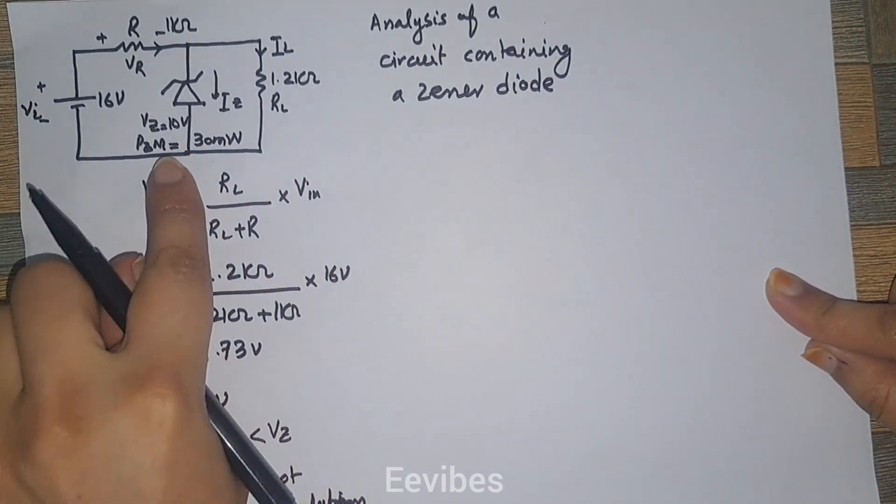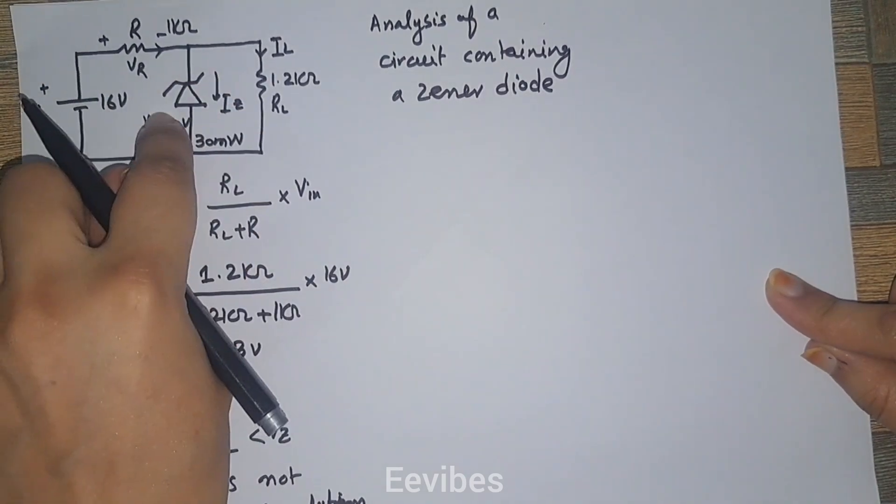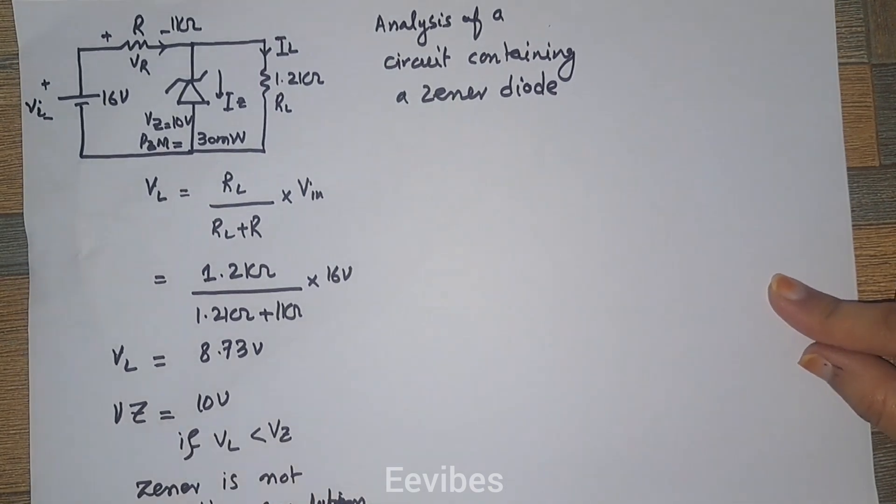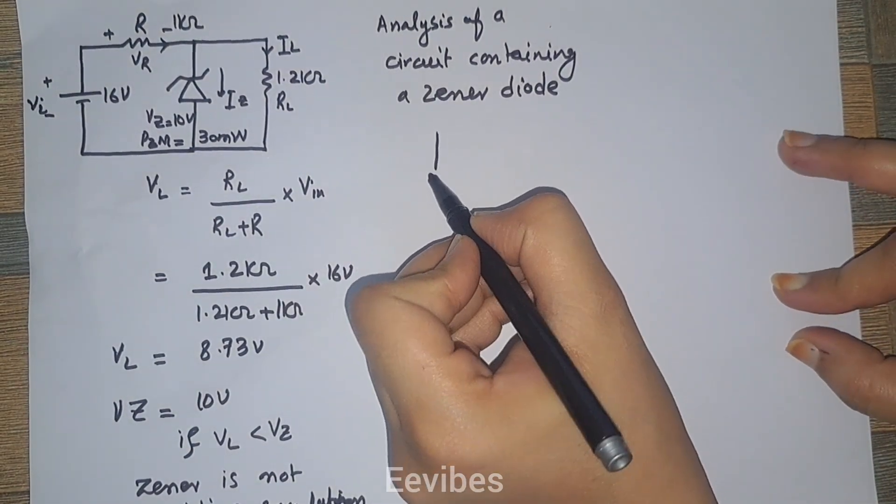But this is not the scenario since VL is less than VZ. Now in this case, the equivalent circuit can be drawn by replacing the zener with an open circuit, which means it is not on.